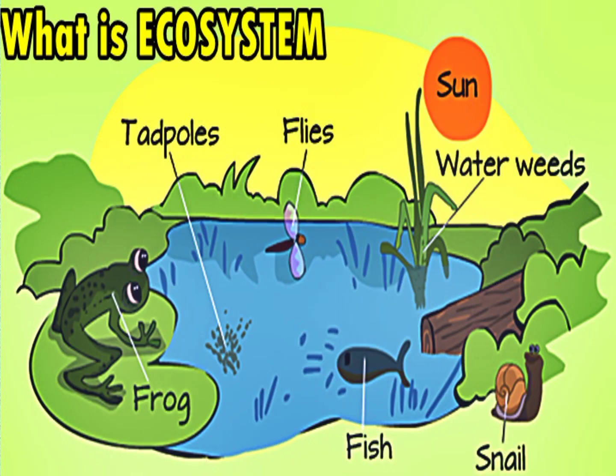This is an example of a simple ecosystem. We have frog, tadpoles, flies, sun, waterweeds, fish, and snail — they are different living organisms. But there are also non-living things they interact with. The sun is a non-living component that interacts with the living organisms every day.